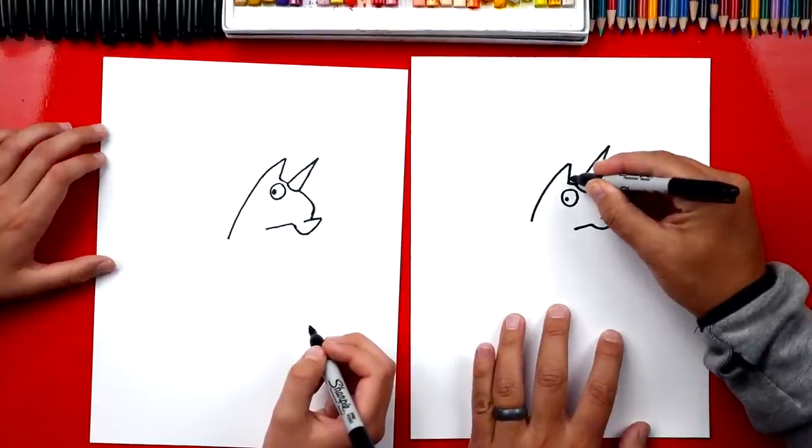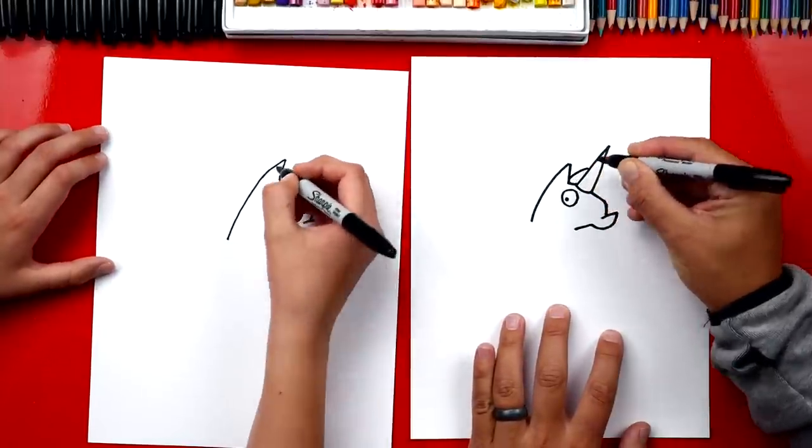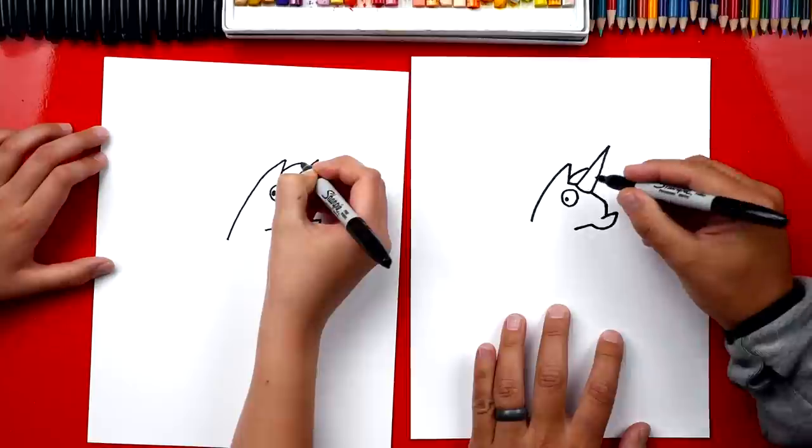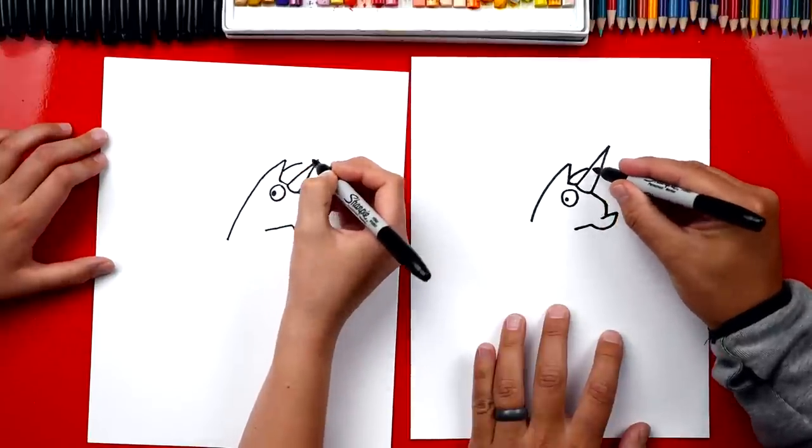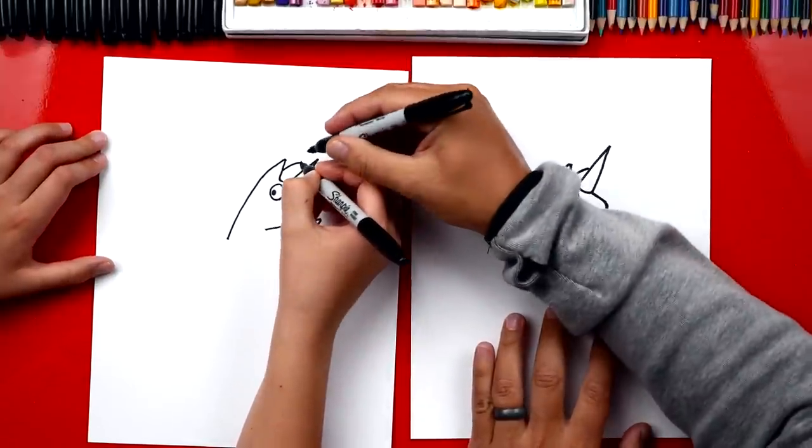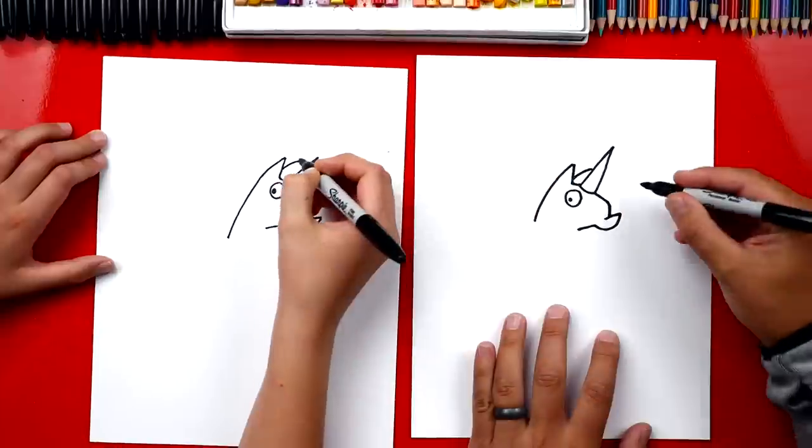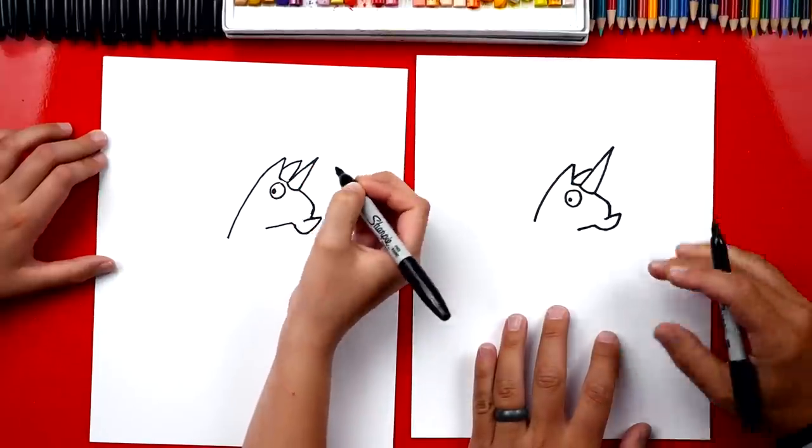Okay, now we're gonna draw this second ear behind his horn. So we're just drawing a diagonal line that connects the ear to the horn. And that's okay, just come back down and finish the front of his ear. Yeah, it's all right. Good job.